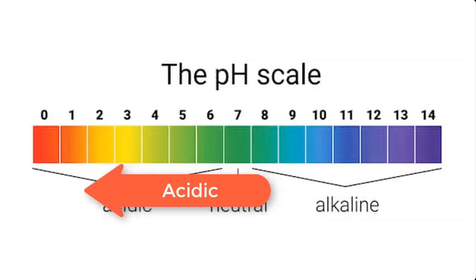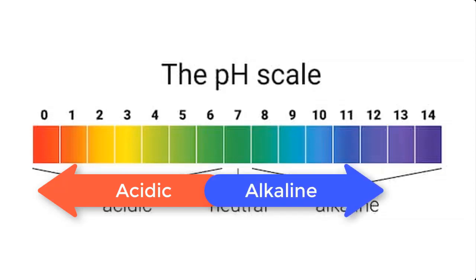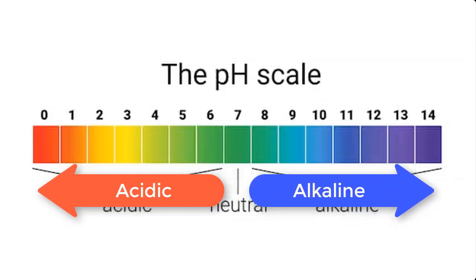Acidity increases from 6 to 0. This means that 0 is more acidic than 1, and 1 is more acidic than 2. This also means that 6 is least acidic on the pH scale. On the other hand, 8 is less alkaline than 9, and 9 is less alkaline than 10. In summary, 8 is least alkaline while 14 is most alkaline.